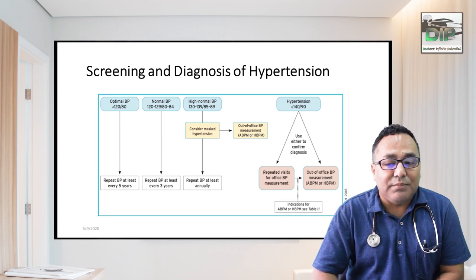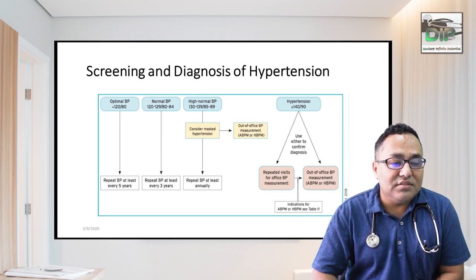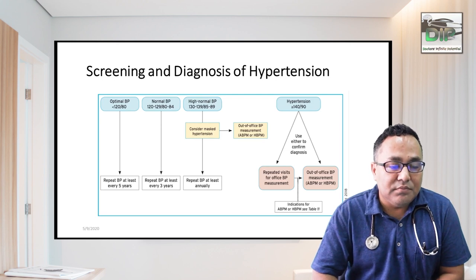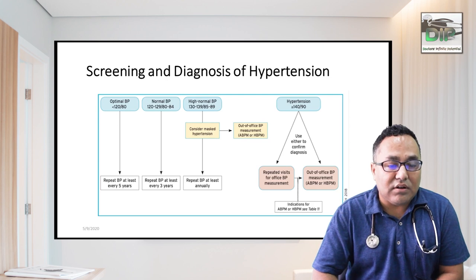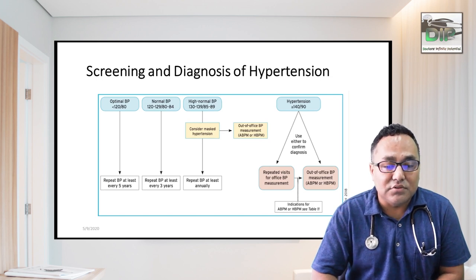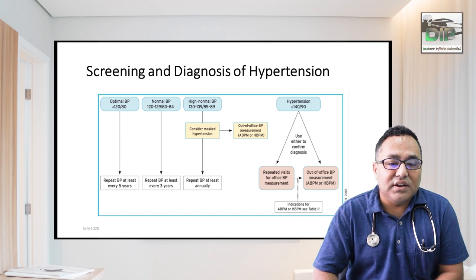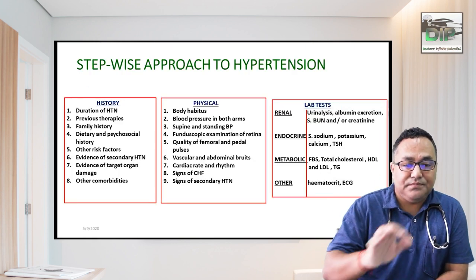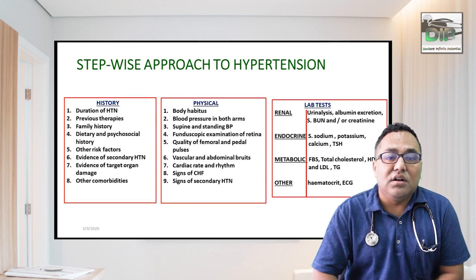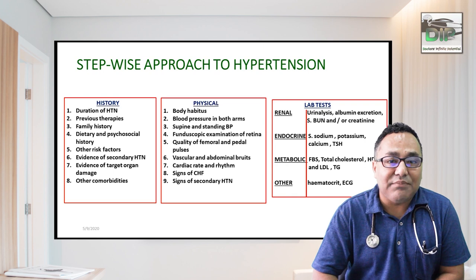To screen and diagnose hypertension: if optimal BP is less than 120/80, measure BP every five years. For normal BP, measure every three years. When the patient has high normal BP and you are considering masked hypertension, measure BP daily until controlled, then follow up monthly or weekly. In the stepwise approach to hypertension, always take a proper history, perform a thorough examination, make a differential diagnosis, order appropriate lab tests, and make a final diagnosis.